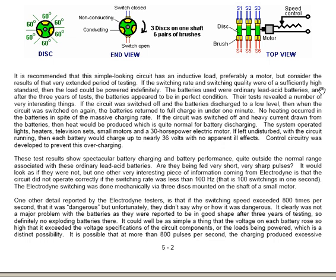Are the batteries being fed short, very sharp pulses? It would look as if they were not, but one very interesting piece of information from Electrodyne is that the circuit did not operate correctly if the switching rate was less than 100 cycles per second — that is, 100 switchings in one second. The Electrodyne switching was done mechanically via three discs mounted on the shaft of a small motor. One other detail reported by the Electrodyne testers is that if the switching speed exceeded 800 times per second, then that was dangerous. Unfortunately, they didn't say why or how it was dangerous, though it clearly was not a major problem with the batteries, as they were reported to be in good shape after three years of testing.